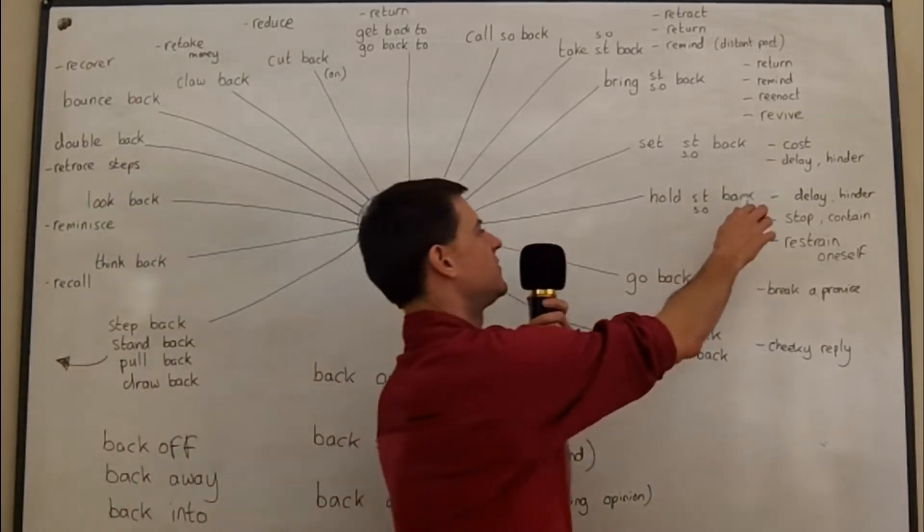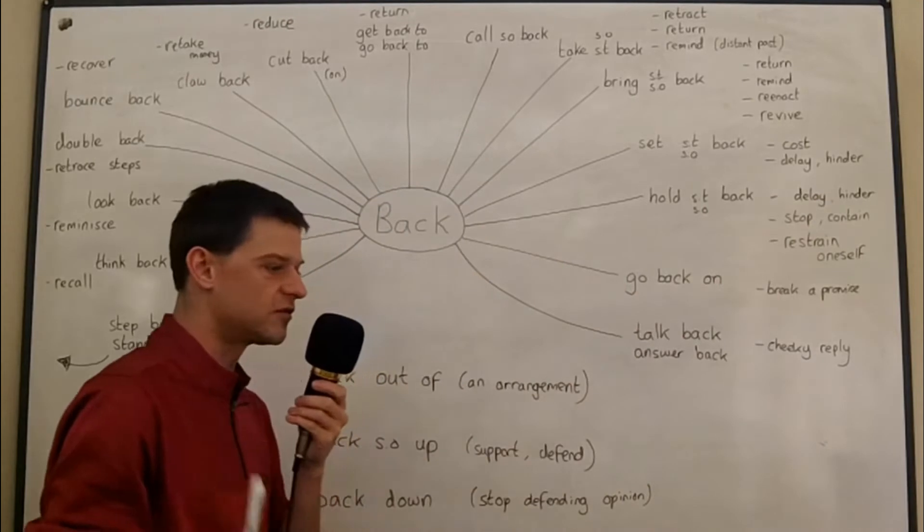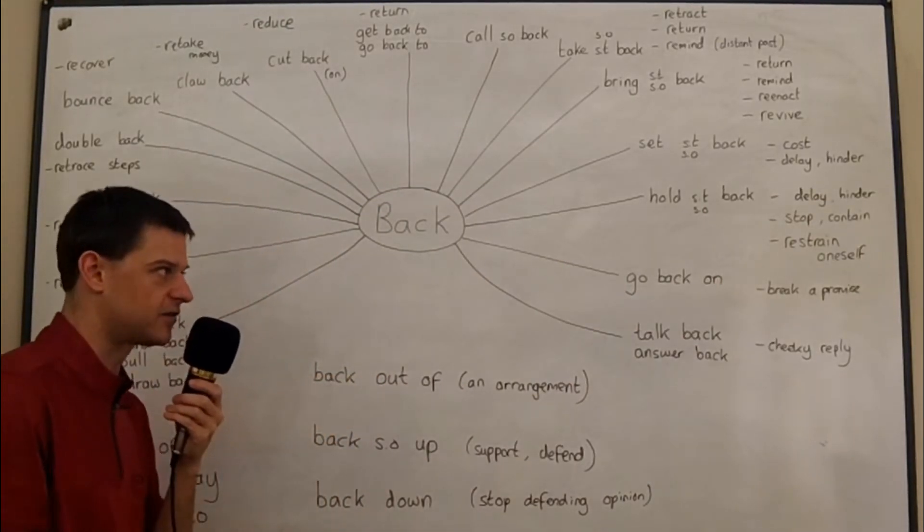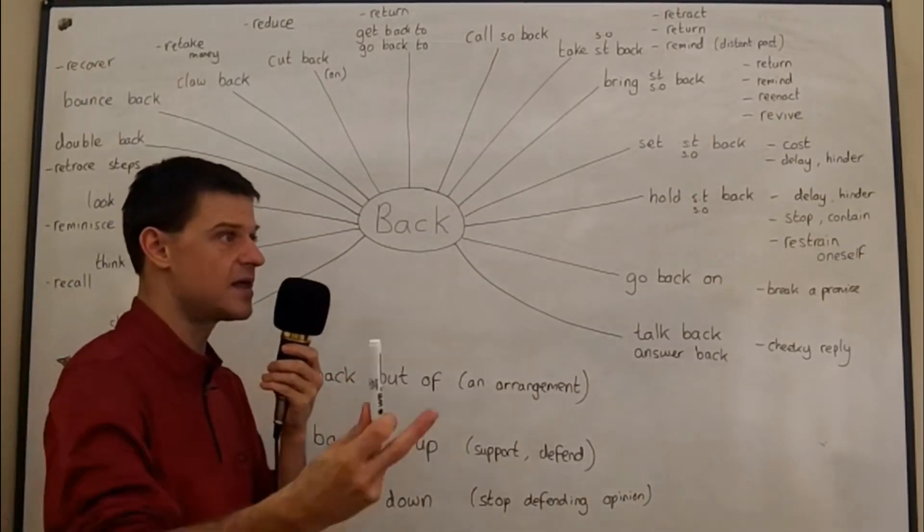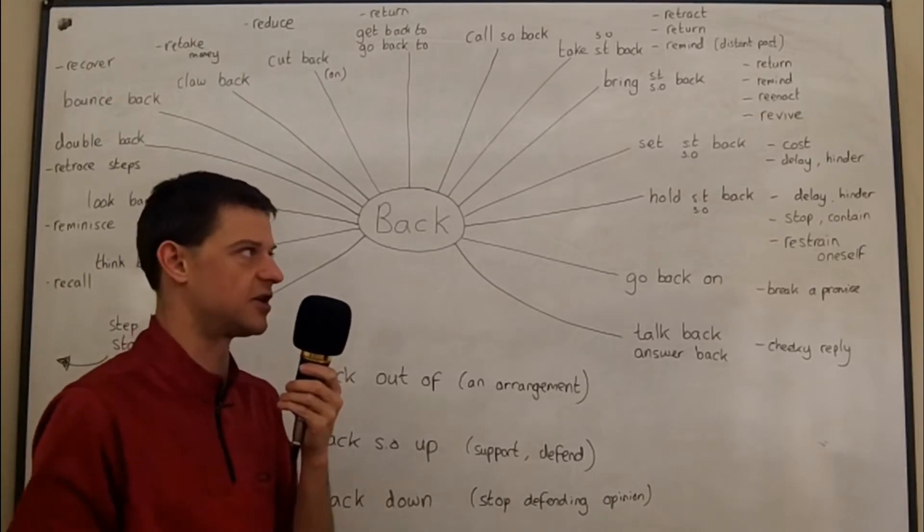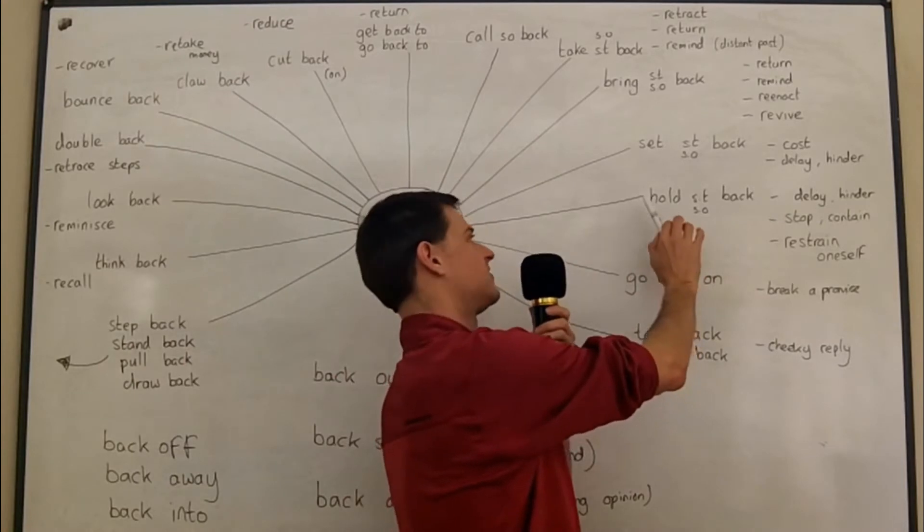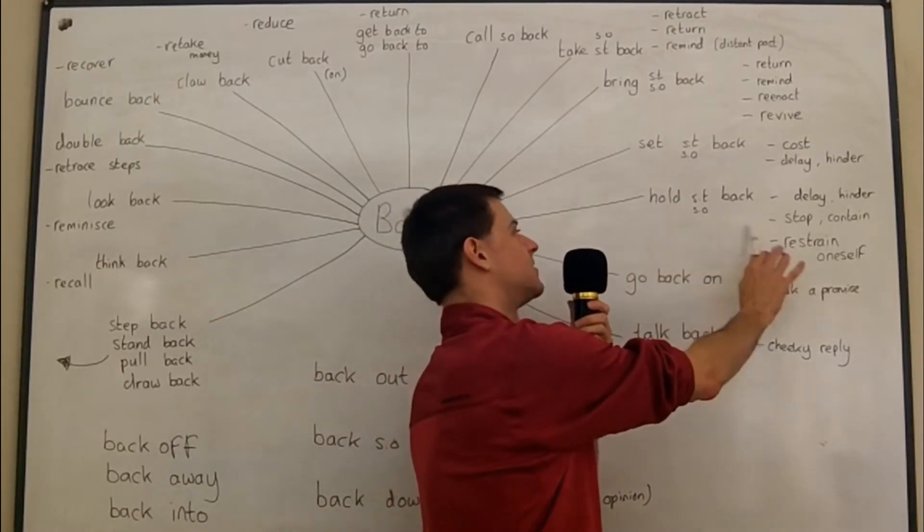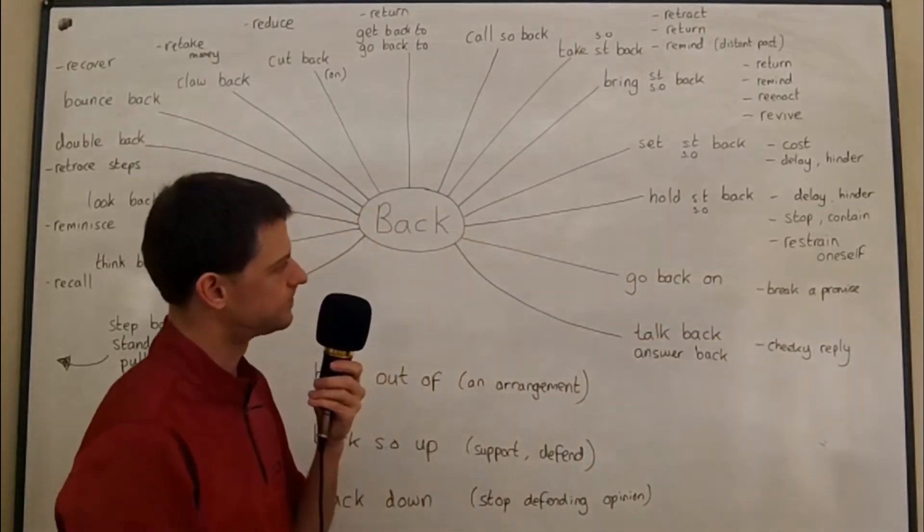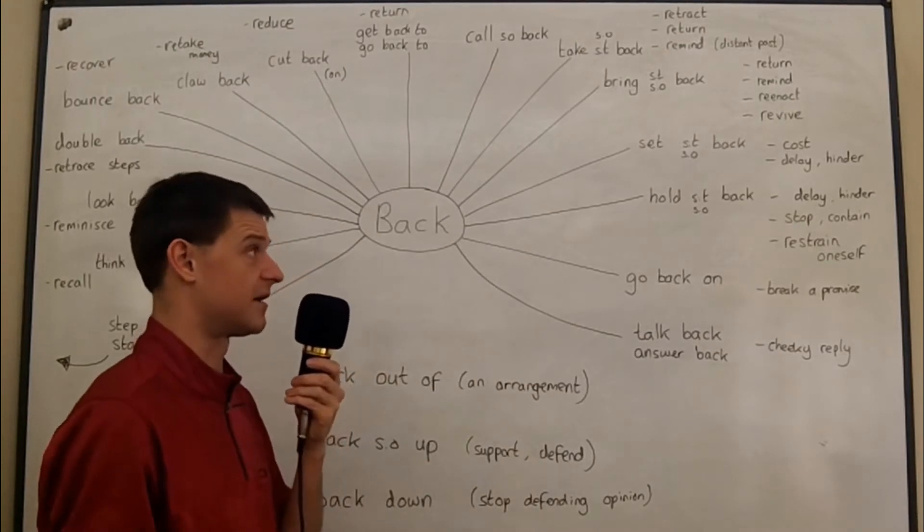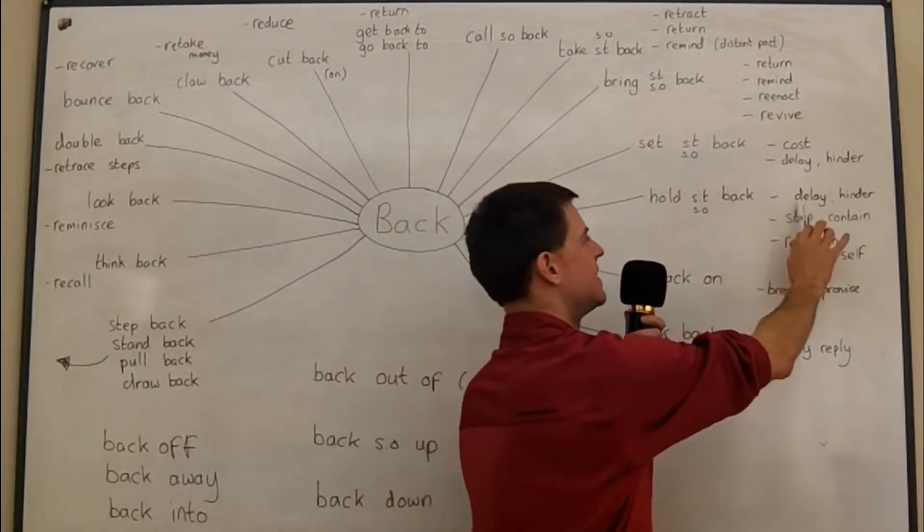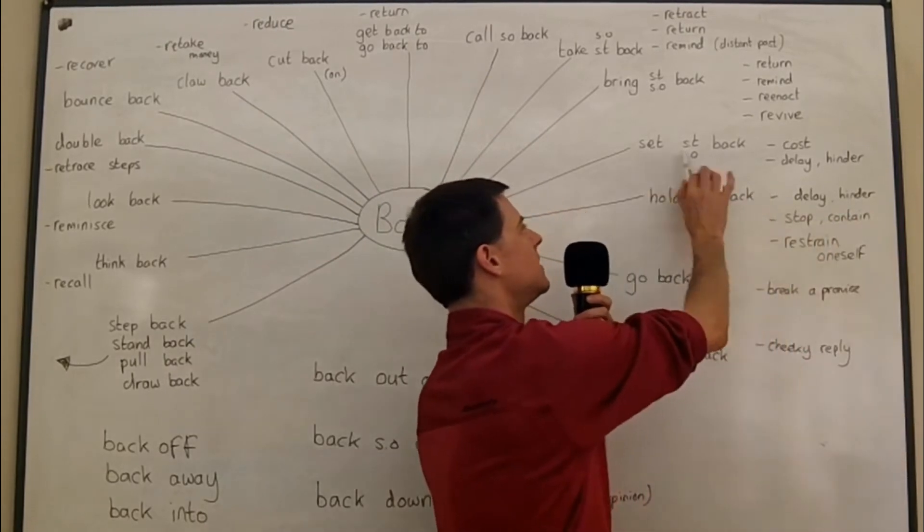Okay. Set something back - if something sets you back, it delays your progress very often. So you can say we have suffered a few setbacks, and you can say the weather has set us back three months - it's set the project back three months. You can also say it has held the project back for three months - it has been holding it back for the last three months, something like this - and then it would mean delay or hinder.